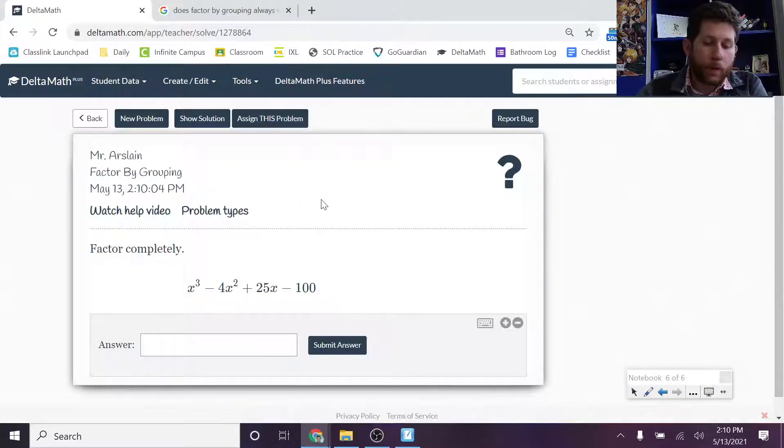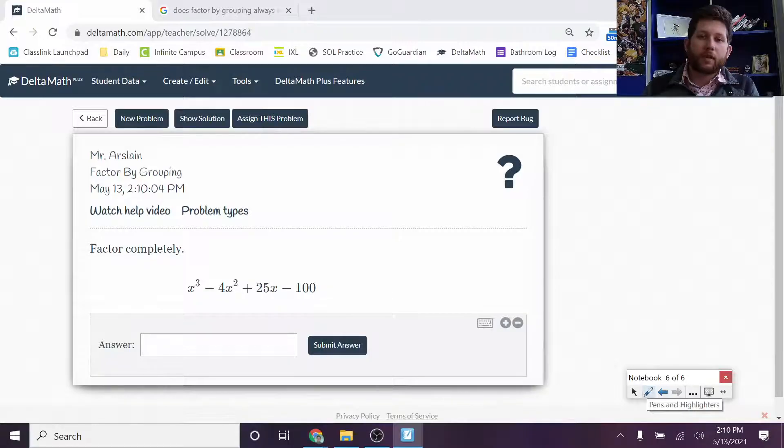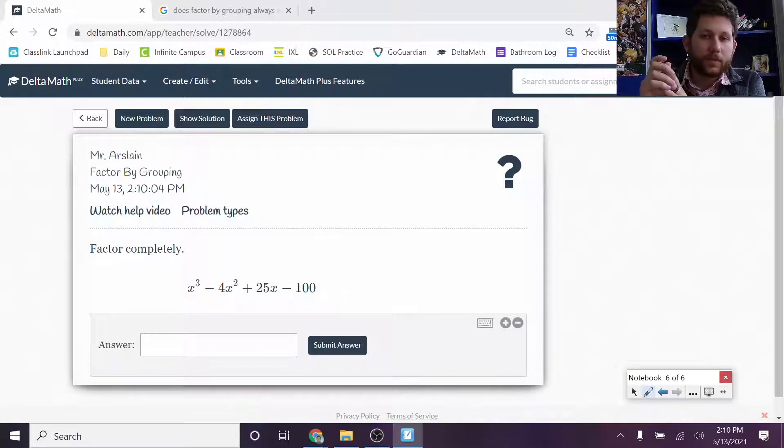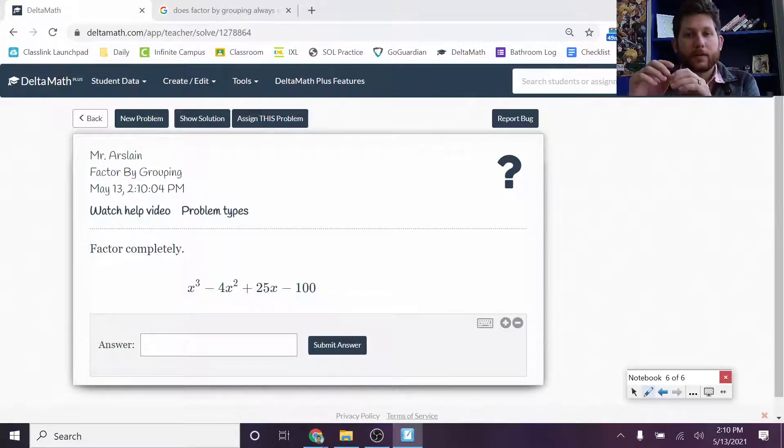So let's just start with the one that just does factoring by grouping. The way you factor by grouping is you consider the first two terms and the last two terms. You find the greatest common factor between those two and divide it out. And then ideally, if it's set up correctly, it should end up with a common binomial in the first and second term. Now that's a bit confusing. Let me show you what I mean.